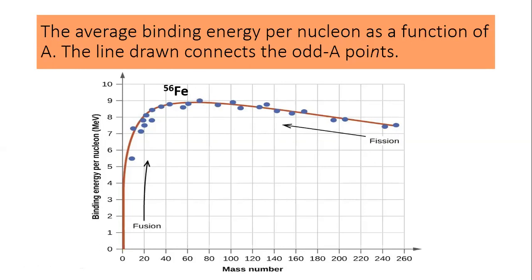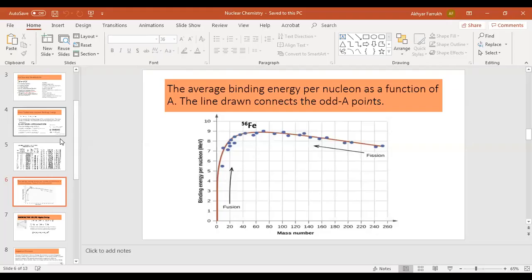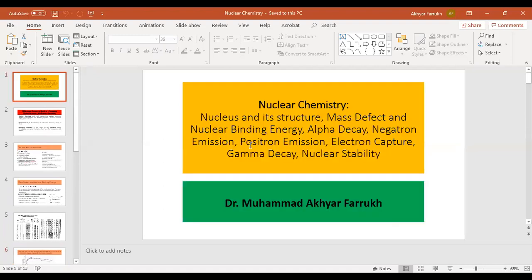The lecture is getting lengthy, so I will end here. In the next lecture, I will explain the remaining parameters — the nuclear decays: alpha decay, electron emission, positron emission, and electron capture. Thank you for watching this lecture, and see you in the next lecture.